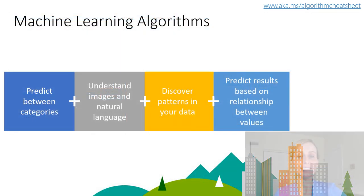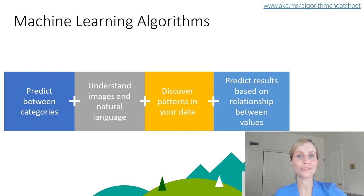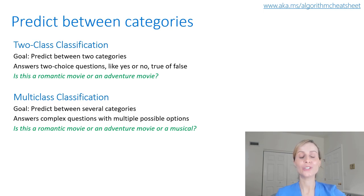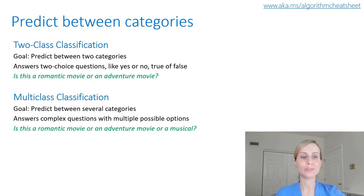Machine learning has many different algorithms and each algorithm can help you achieve a different goal and answer different questions. The first category is predicting between different categories. Here we have two types: two-class classification, which is great at answering two-choice questions like yes or no, true or false; and multi-class classification, which is great at answering complex questions with multiple possible options.